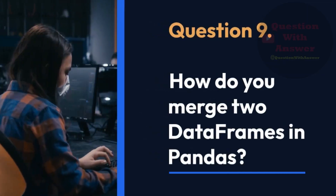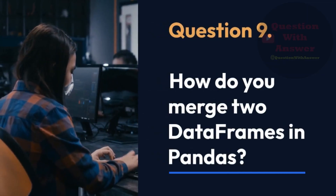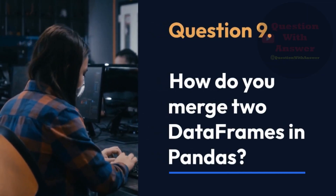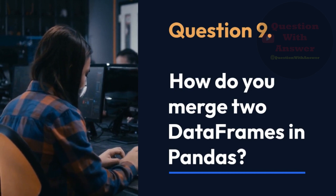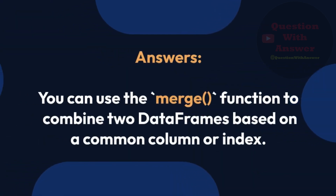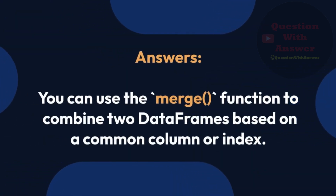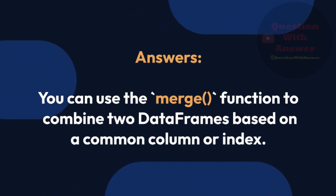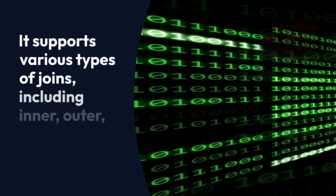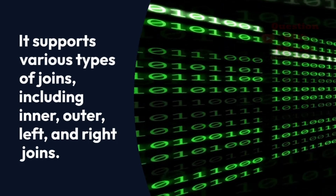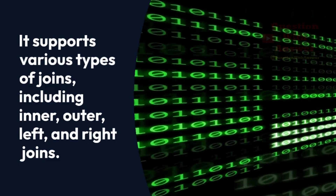Question 9: How do you merge two DataFrames in Pandas? You can use the merge() function to combine two DataFrames based on a common column or index. It supports various types of joins, including inner, outer, left, and right joins.